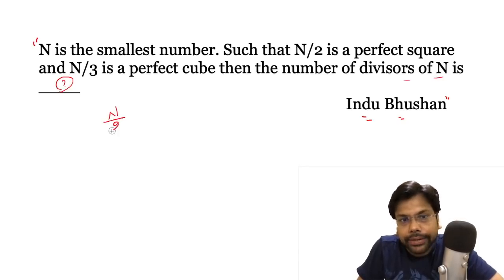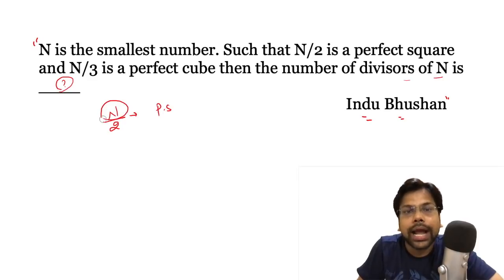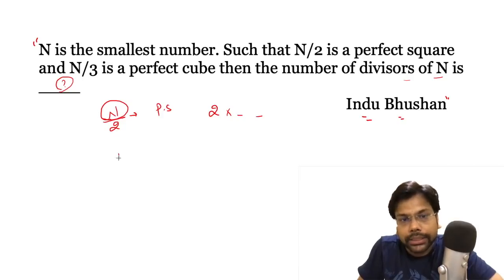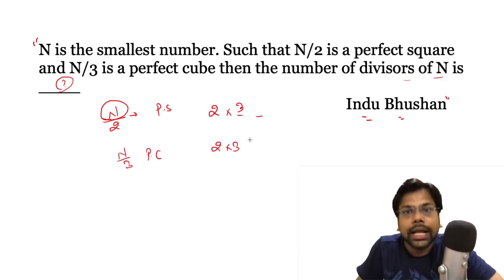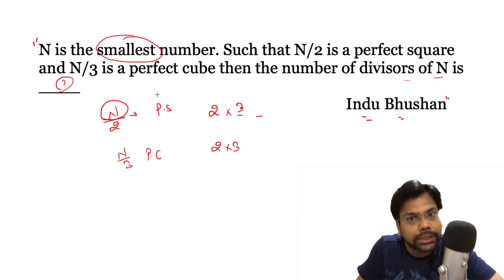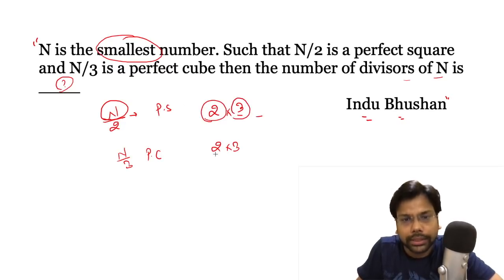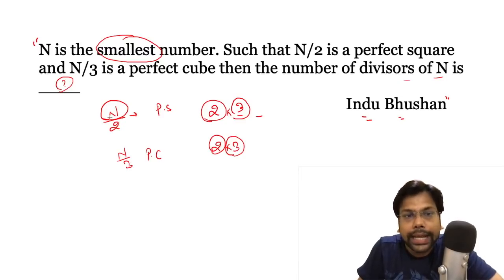We know n divided by 2 is a perfect square — it means n must have 2 as a factor, and could have other primes too. N divided by 3 is a perfect cube — it means n also has 3 as a factor. So both 2 and 3 are prime factors of n. Since we want the least number, there is no need to take other primes. We take only 2 and 3 as prime factors of n.